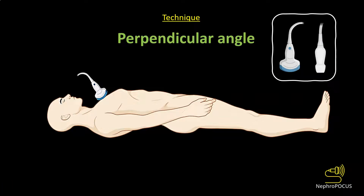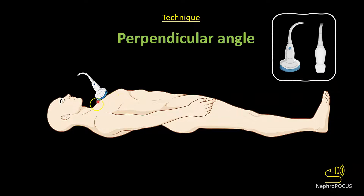For technique, you can use either a curvilinear transducer (abdominal probe) or a phased array transducer (cardiac probe) to perform lung ultrasound, especially when looking at A lines and B lines. If you want to look at pleural characteristics closely, use a high-frequency linear probe. Wherever you put the probe, it must be perpendicular to the chest wall, so you need to pay attention to the curvature of the chest wall, otherwise you will not get a good artifact pattern.